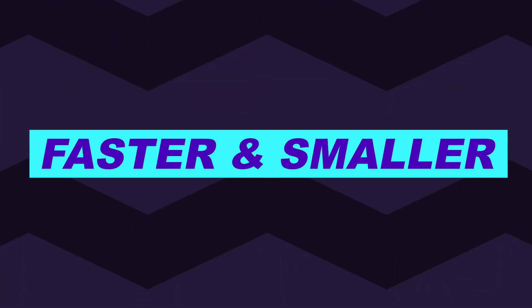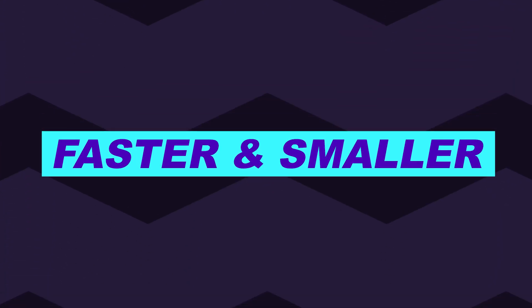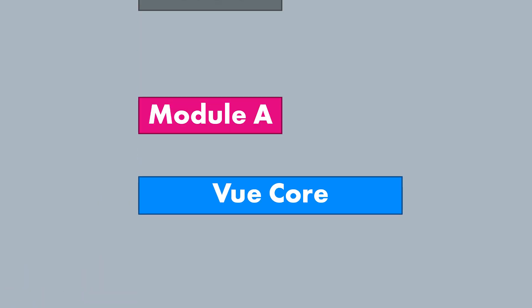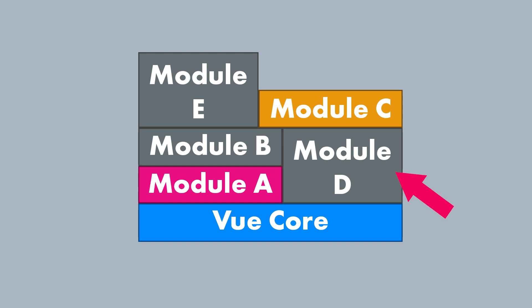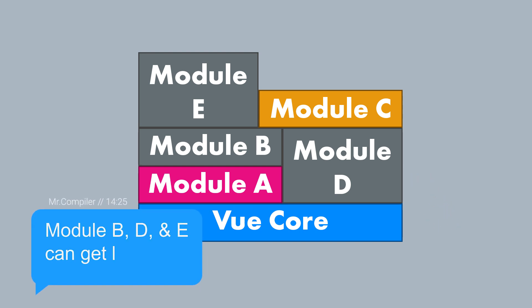Moving on, the next major change is how the Vue team have rewritten the entire framework to be faster and smaller than Vue 2. Let's go over some specific ways they've implemented this, and then at the end we'll look at some benchmarks to see how the numbers stack up. Let's start with how Vue 3 is smaller, which is by utilising a method called tree shaking. In its simplest form, tree shaking refers to removing what is called dead code. When you compile your application to be served online, the compiler removes all unnecessary code that won't actually be used in the final compiled project.